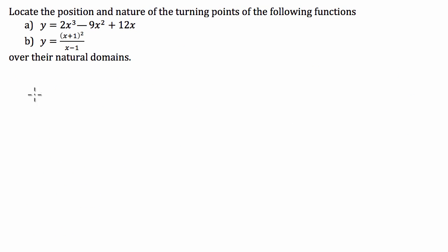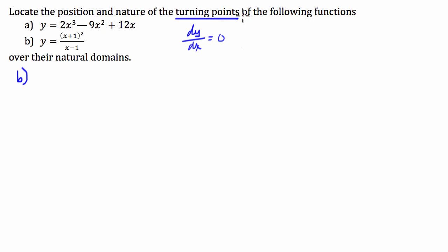On to part B. Hopefully you're now well aware of what we're going to be looking for to find the turning points — we're looking for when the derivative is equal to 0. Let's compute the derivative of this function. Computing the derivative here is going to be a little trickier than the straight cubic we just did, so we're going to use the quotient rule.